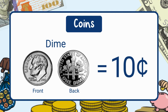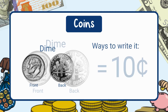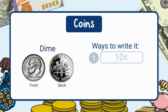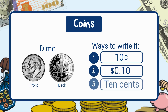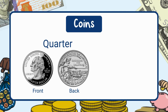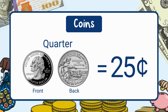This is a dime. It's worth 10 cents, but it's the smallest coin. Ways to write it: standard form, 10 cents; decimal form, 10 cents; written form, 10 cents. This is a quarter. It's worth 25 cents — that's five nickels, or two dimes and a nickel.